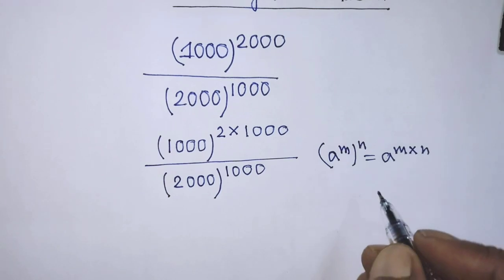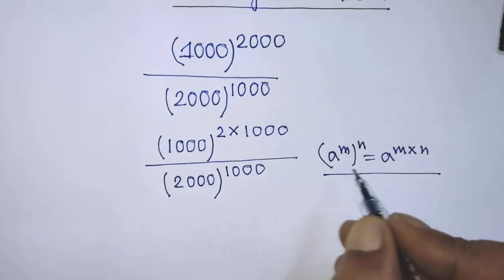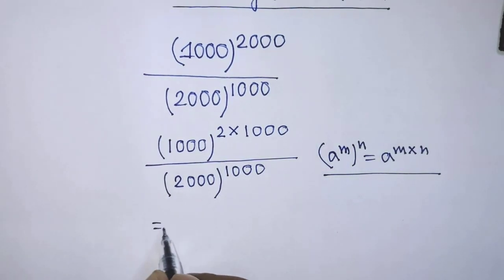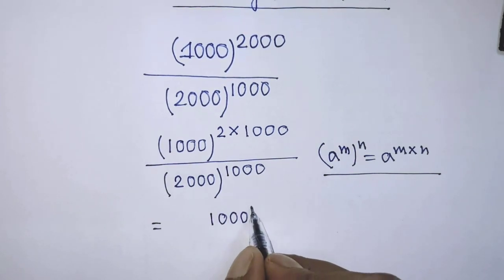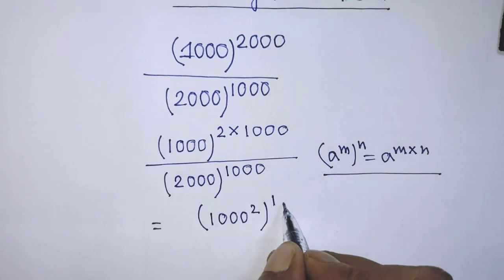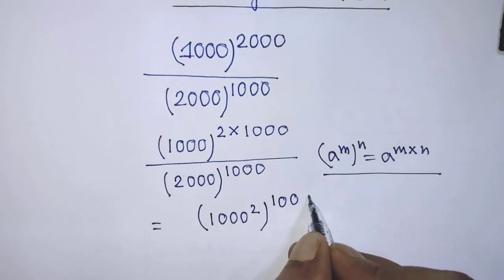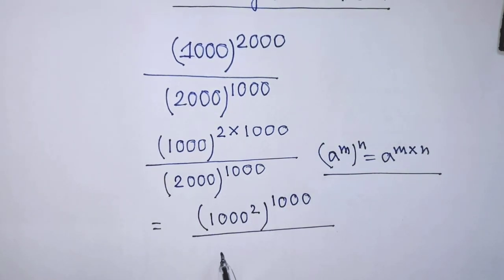According to this formula, it will be 1000 to the power 2 whole to the power 1000 over, again you have to write 2000 whole to the power 1000.